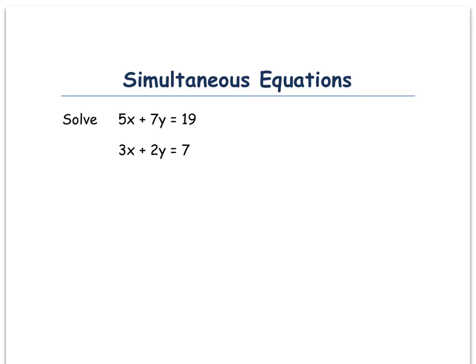So, I'm going to times this top one, number one, by two, and I'm going to times number two by seven. The reason I've picked these numbers is because I know both seven and two go into fourteen. So, I've got to multiply the whole of this top one by two to get the seven to fourteen, and I've got to multiply the whole of the second one by seven to get that two equal to fourteen.